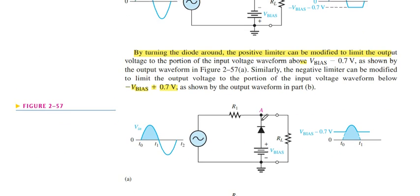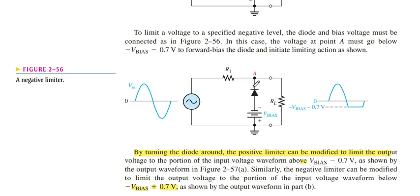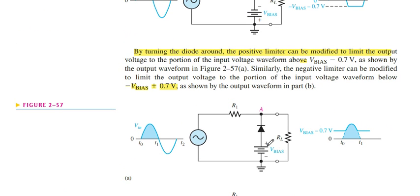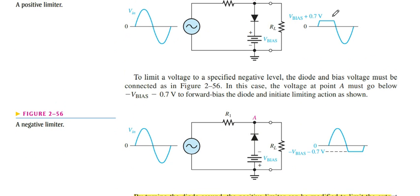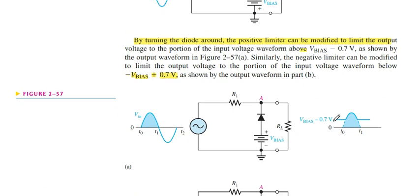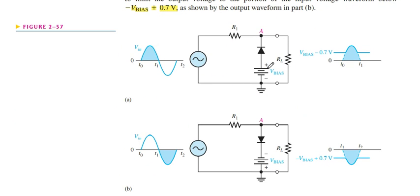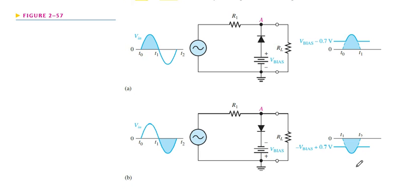Third, we keep the same diode but reverse the battery. Our positive side of the diode and battery are connected, then we get the opposite form compared to the first. Fourth, when we reverse both the battery and the diode — or the battery's negative terminal is connected to the diode's negative terminal — then we get this result in negative form.